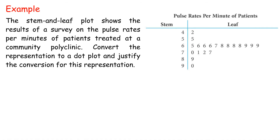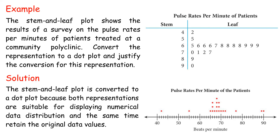Example: a stem and leaf plot shows the results of a survey on the pulse rates per minute of patients treated at a community polyclinic. Convert the representation to a dot plot. Solution: the stem and leaf plot is converted to a dot plot because both representations are suitable for displaying numerical data distribution and at the same time retain the original data values.